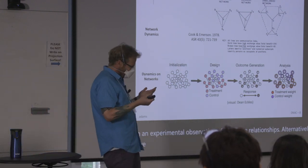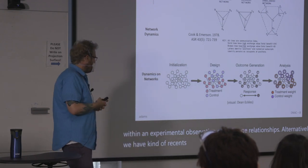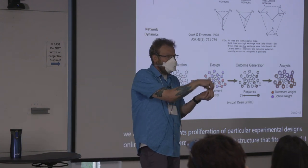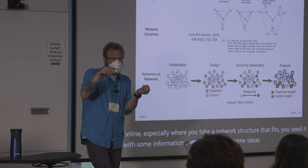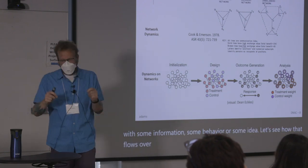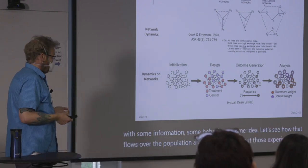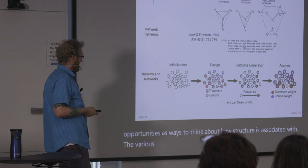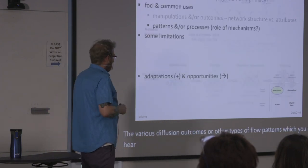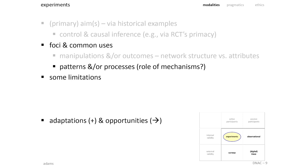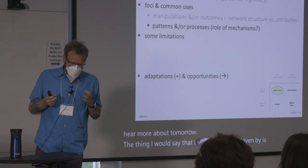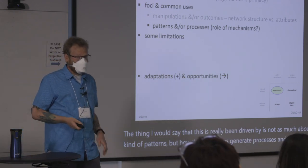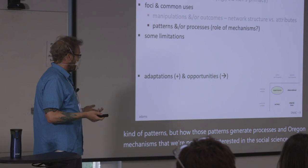Alternatively, there has been a recent proliferation of experimental designs online where you take a network structure as fixed, seed it with some information, some behavior, some idea, and see how that flows over the population. We can think about those experimental opportunities as ways to understand how structure is associated with various diffusion outcomes or other flow patterns — which you'll hear more about tomorrow. But really, what has driven this is thinking about how patterns generate processes and mechanisms that we're potentially interested in across the social, behavioral, and health sciences.